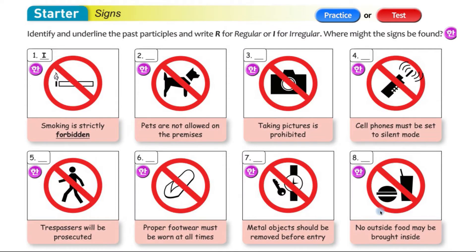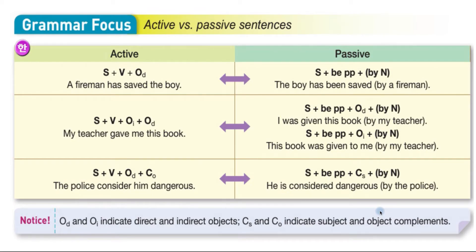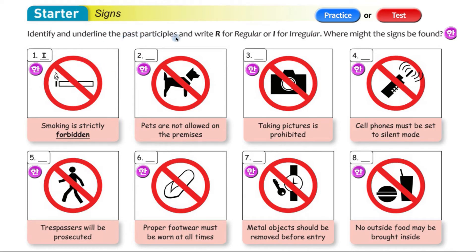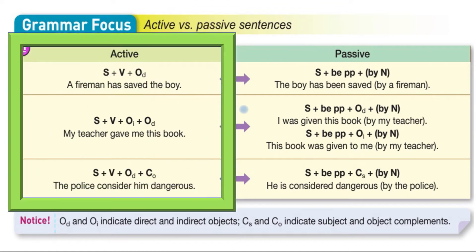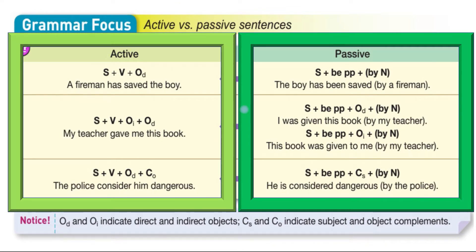Onwards and forwards! So you notice here it mentioned past participles and it's talking about regular or irregular. This sentence is written: 'Smoking is strictly forbidden.' They've all got the be verb in them. Because today's grammar point is active versus passive sentences. In English, we have active sentences - 'A fireman has saved the boy' - and we have passive sentences - 'The boy has been saved by a fireman.' They basically say the same thing, but they're just written in different styles. It's almost like a palindrome.